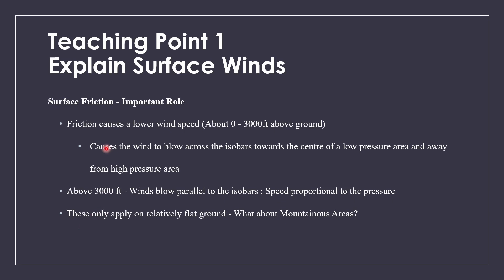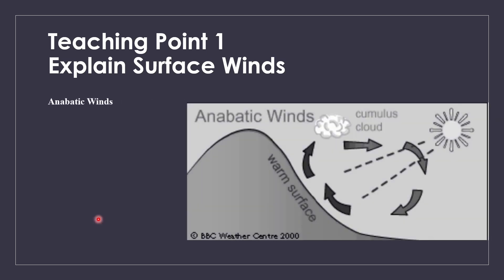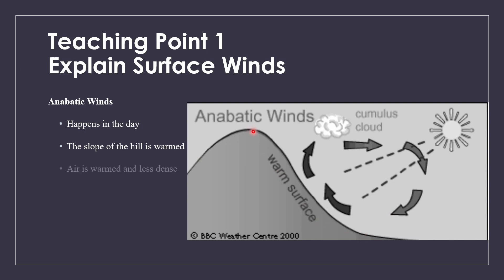Surface friction only applies on relatively flat ground. But what about mountainous areas? For mountainous areas, there are three types of winds, but there's a pair called anabatic and katabatic winds. The first is anabatic winds. This is basically during the day — in the morning, the slope of the hill is warmed by the sun. The surface is warmed, the air around it gets less dense and rises up the slope, creating clouds.